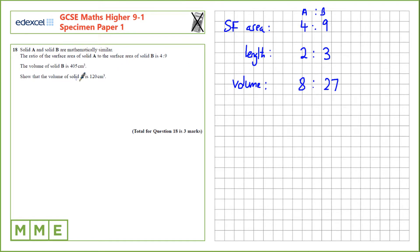If we have the volume of solid B and we want the volume of solid A, we know that the volume of solid A, we calculate it by finding 8 over 27 of the volume of solid B, that's 405.